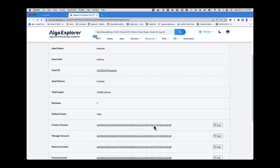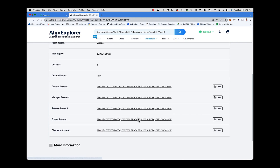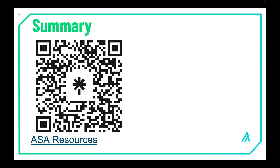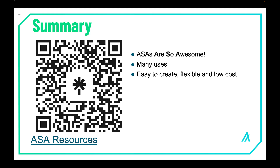In summary, ASAs are so awesome. Algorand has several SDKs and ecosystem tools that can be used to create assets for your application, as we will show in the next video. ASAs are perfect for many use cases on the blockchain, including copyrights, in-game points, stable coins, and collectibles. ASAs are also easy to create, flexible to use, and have low transaction fees. ASAs are built right into layer one; however, the flexibility is there for smart contracts to use ASAs as well. There's a link down here for resources, including a link to the deck. Thank you, and I hope you enjoyed this video.